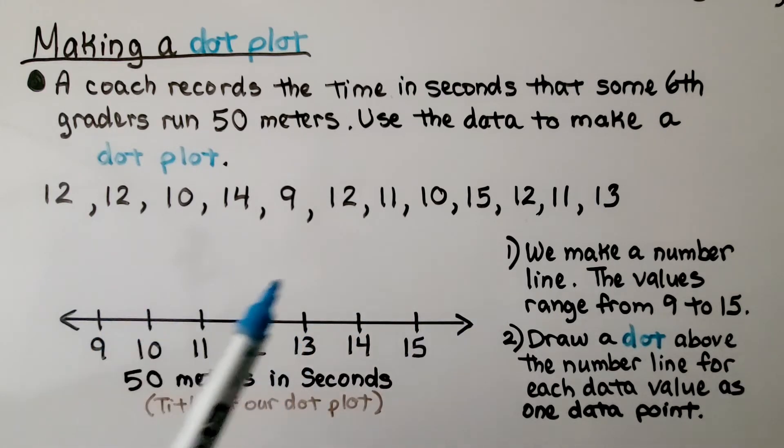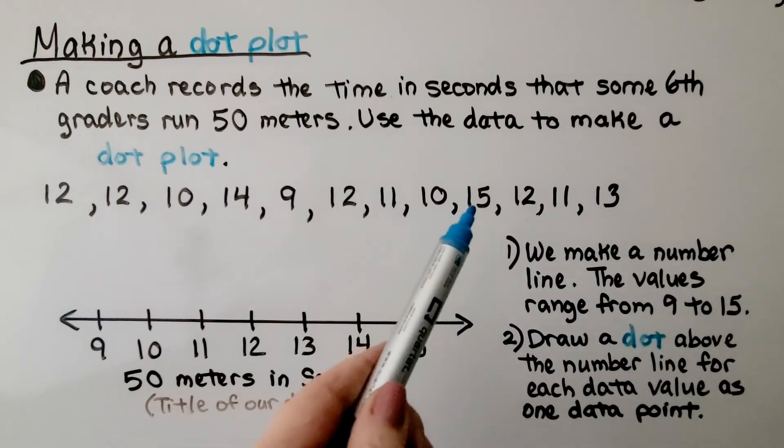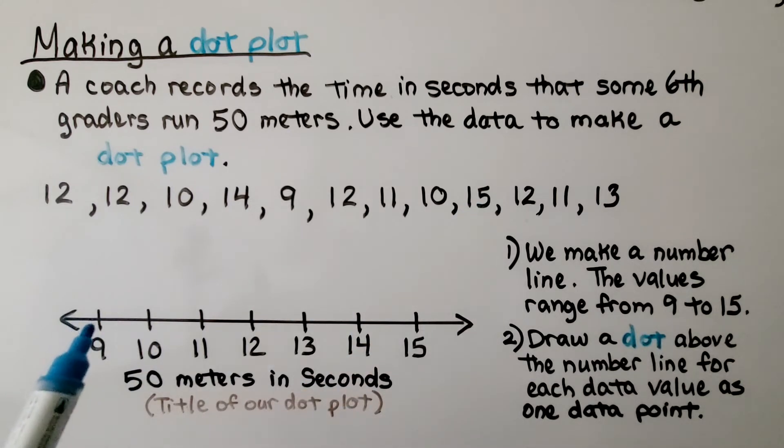The values range from 9 to 15, so our number line is going to go from 9 to 15. Then we draw a dot above the number line for each data value as one data point.